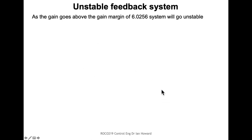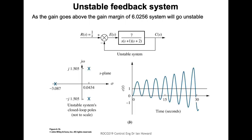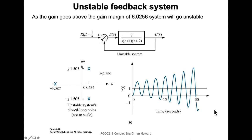However, if we now choose a gain above the threshold — say we set it to 7 — the system now has poles with a positive real component. It also has imaginary parts, so it's oscillating, but because of the positive real component it has an exponentially increasing envelope. Running this as a simulation, the output oscillates with increasing amplitude, and if left running forever it would grow without bound. This system is therefore basically unstable.